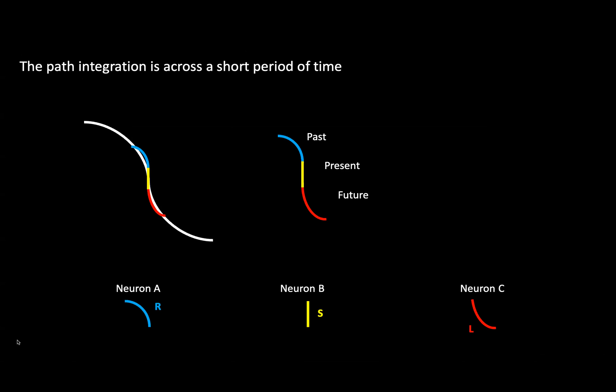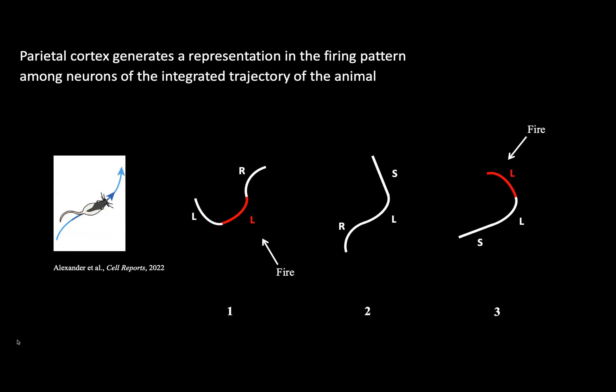Another takeaway from Alexander et al. 2022 was that rather than only reflecting the animal's behavior at the present time, neurons in the parietal cortex can encode information across a short period of time. For example, neuron A fires for the animal's past turn action, neuron B fires when going straight in the present, and neuron C fires when the animal is about to make a left turn in the near future. Together, this group of neurons reflects a small portion of the trajectory to help us understand where we are along the route. This is what we call path integration across time, and it plays an important role in spatial navigation and spatial working memory.